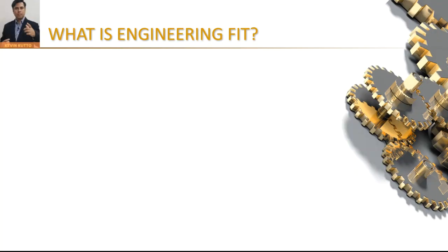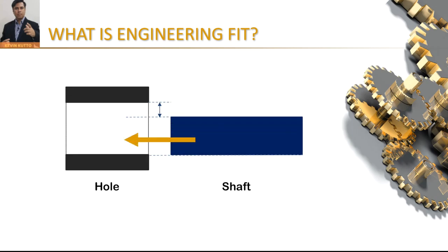When we talk about engineering fit, it is always concerned with two parts to be assembled. When two parts are to be assembled together, the relationship which results from the difference between their sizes before assembly — that relationship is called engineering fit. For terminology, we say the male part is a shaft and the female part is the hole, and we are talking about the assembly of shaft and hole.